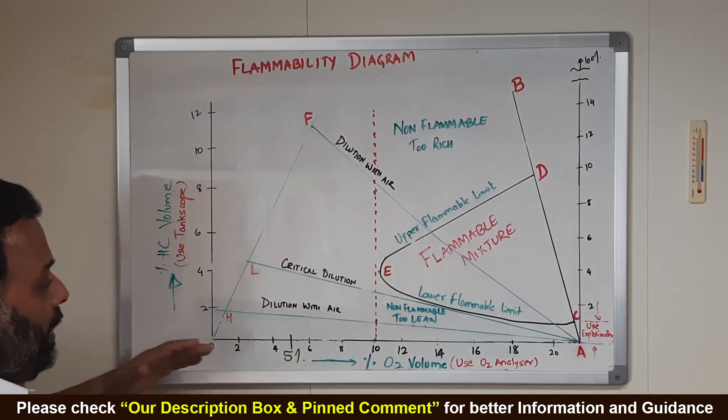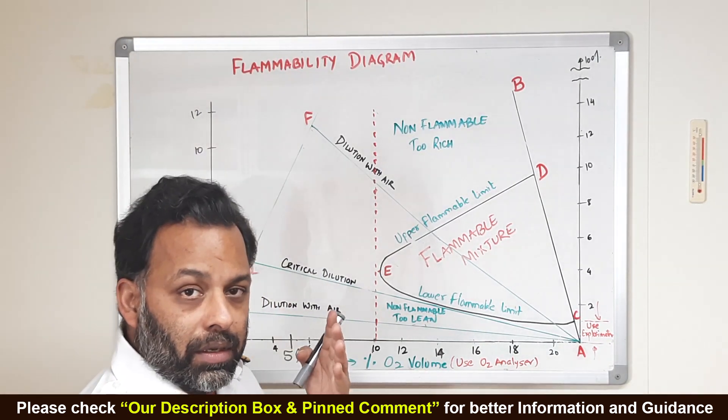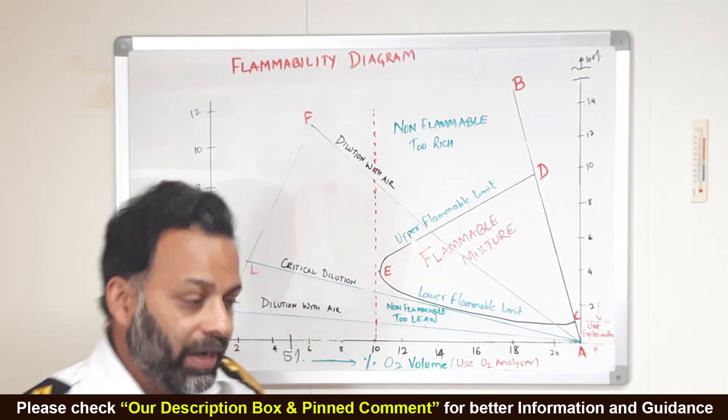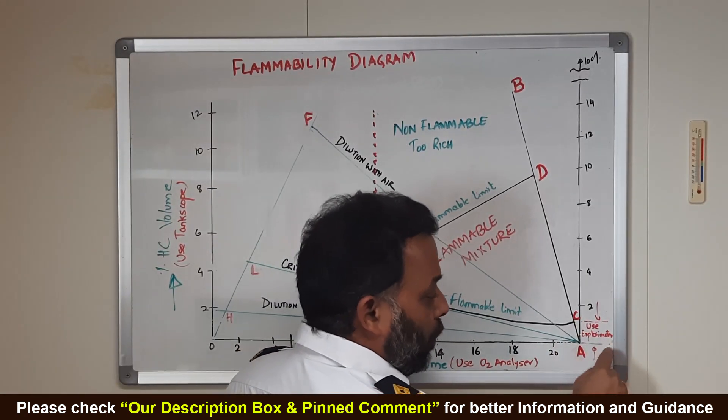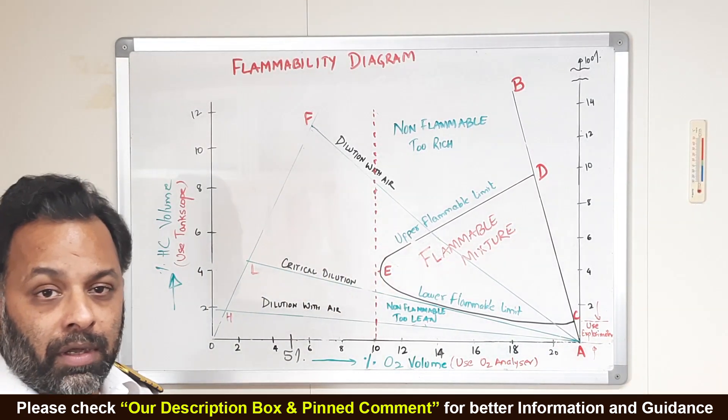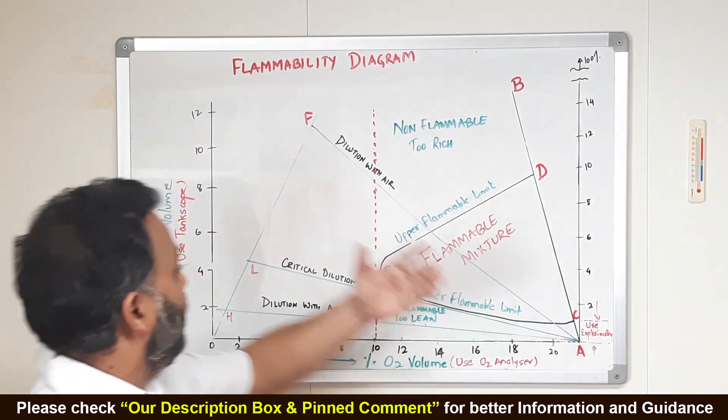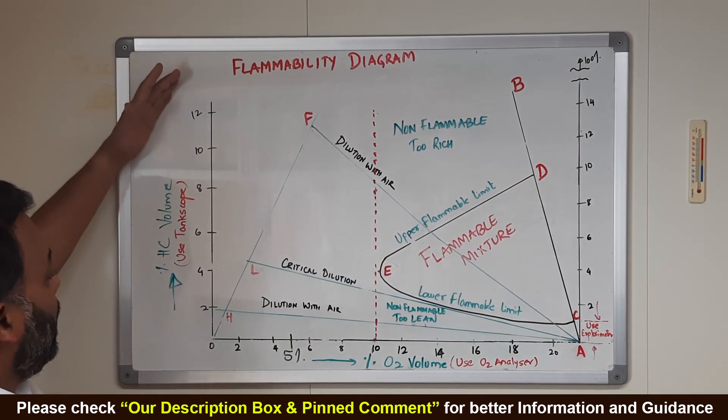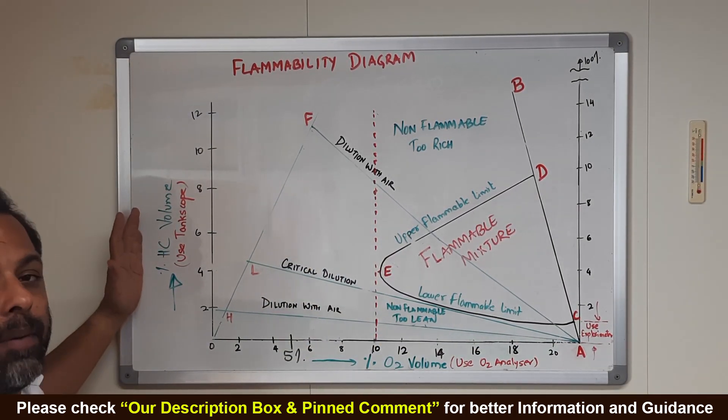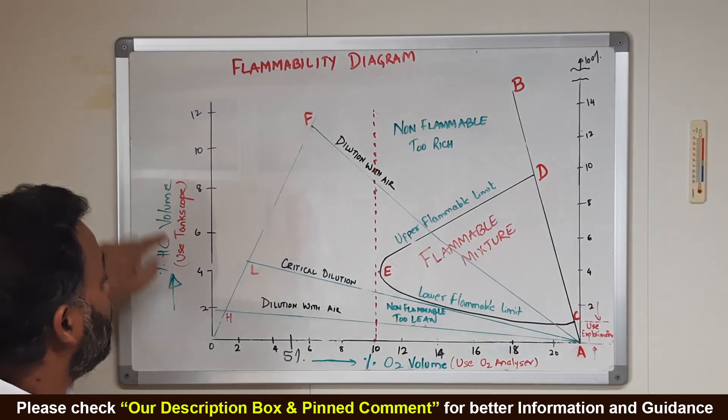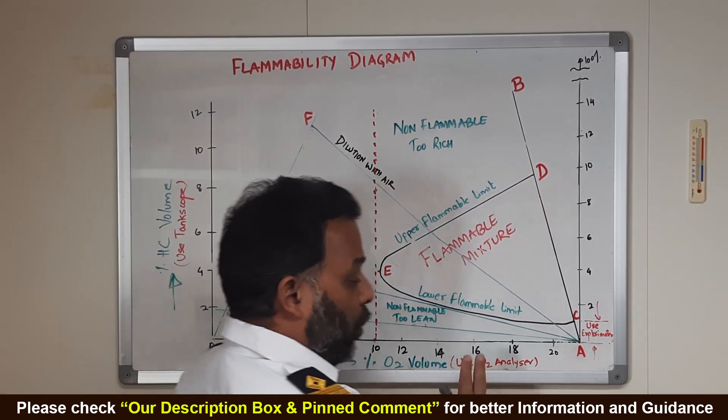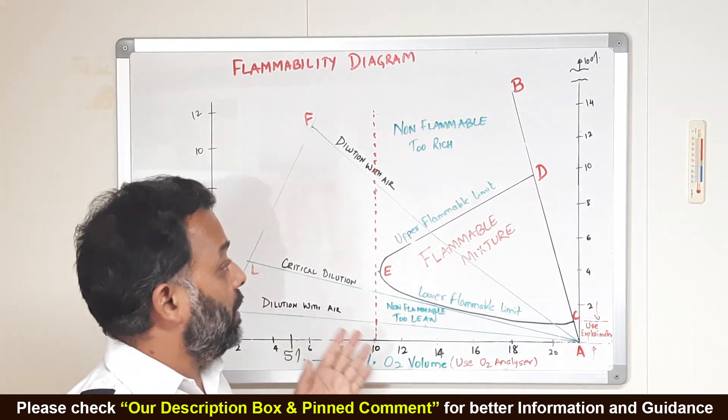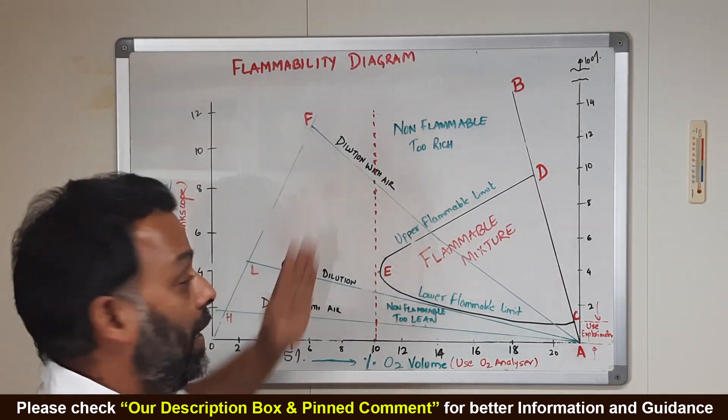One more thing, when we are measuring the tank atmosphere below the lower flammable limit, we use an equipment called explosimeter. When we are measuring percentage hydrocarbon in volume, we are using an instrument called Paxco. And for oxygen, we check O2 analyzer. And this is what the flammable mixture is.